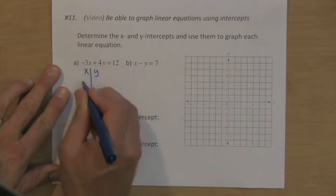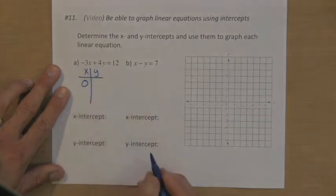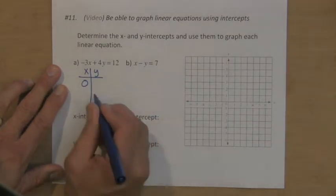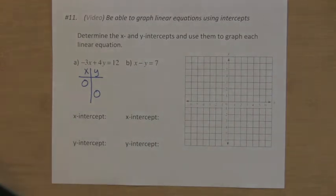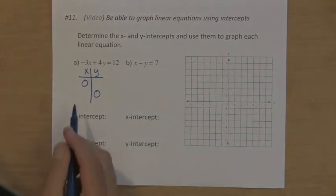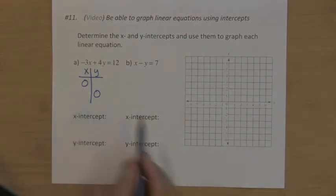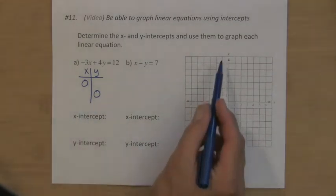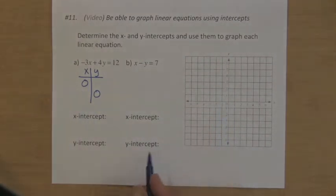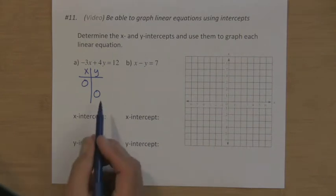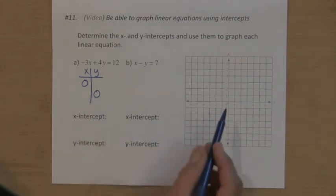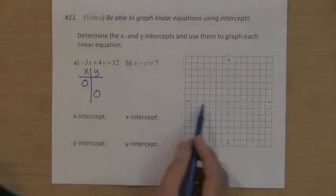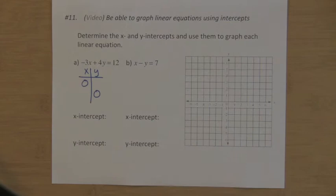You want to know when x equals zero, what is the y value, and when y equals zero, what is the x value. Because when x is zero, that means you're someplace on the y-axis — that's your y-intercept — and when y is zero, that means you're someplace on the x-axis — there's your x-intercept.